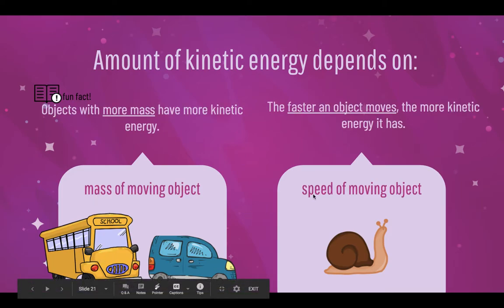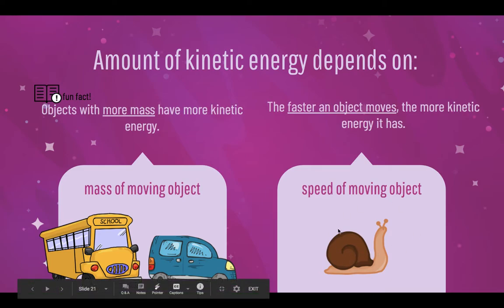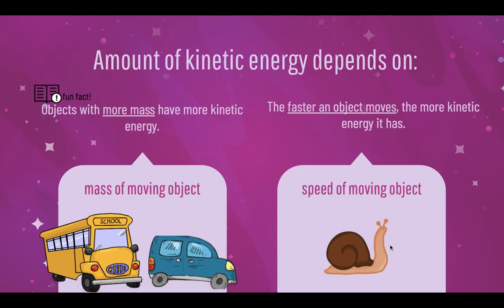For the speed of the moving objects, the faster an object moves, the more kinetic energy it has. So a snail, which is relatively slow, has very low kinetic energy.